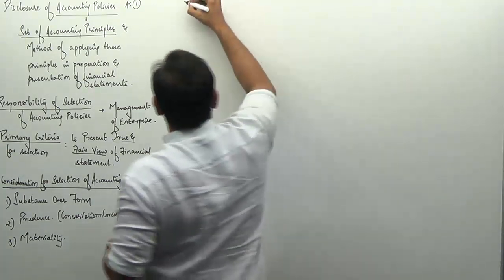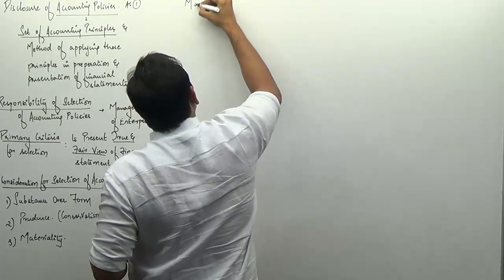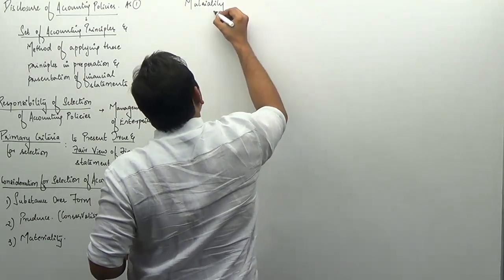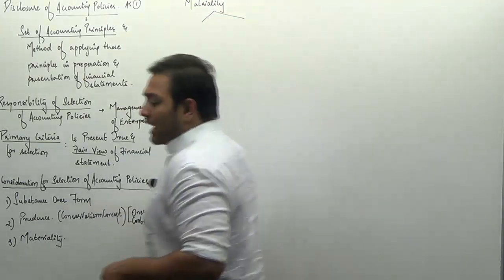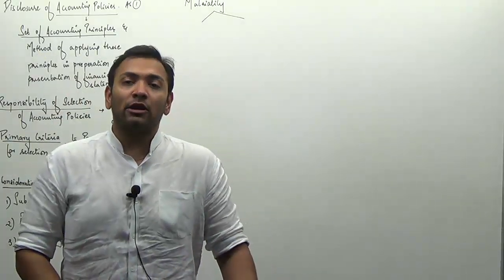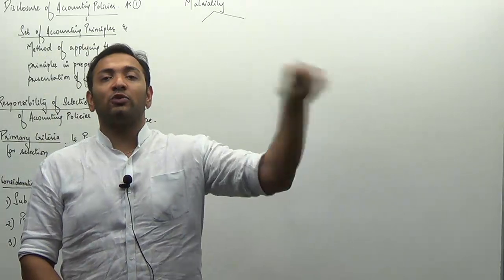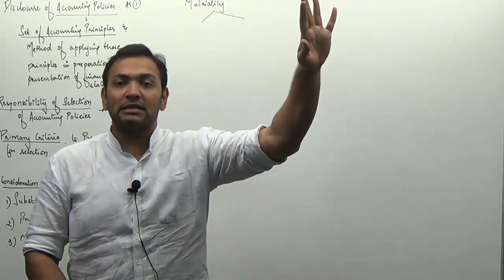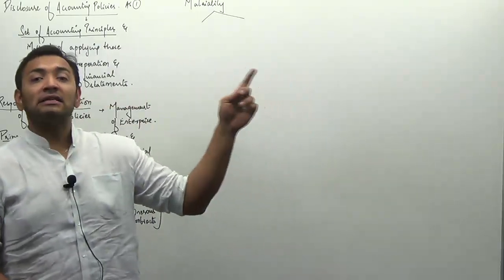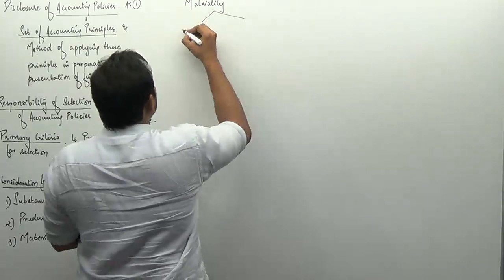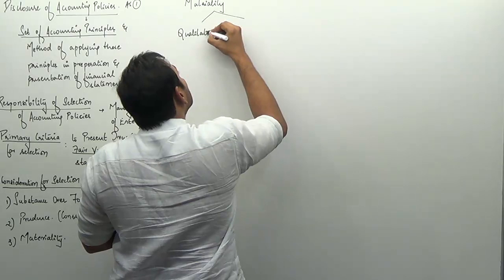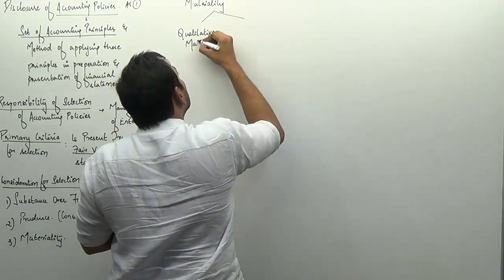The third consideration is materiality. Materiality needs to be defined with respect to two things. According to auditing, an item is material if it affects the decision making of a user. However in accounts, materiality is defined in two ways: qualitative materiality and quantitative materiality.